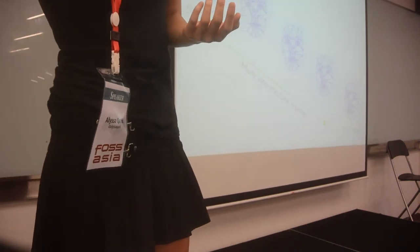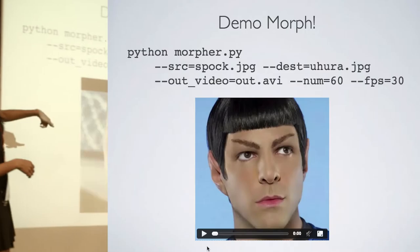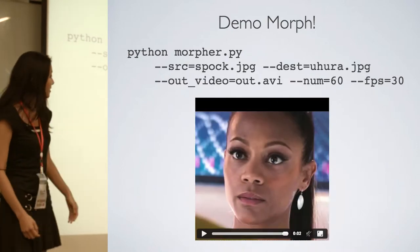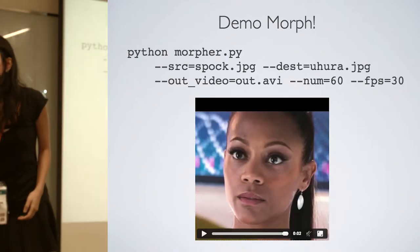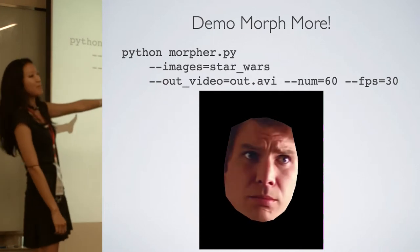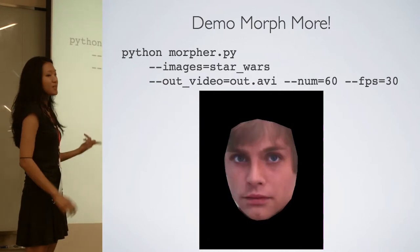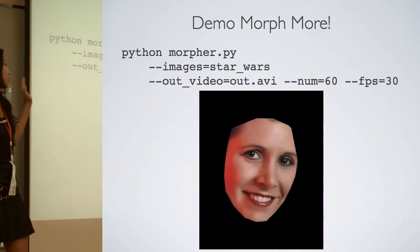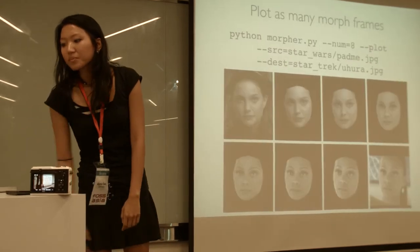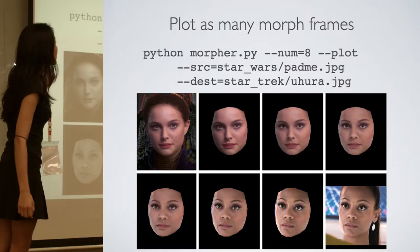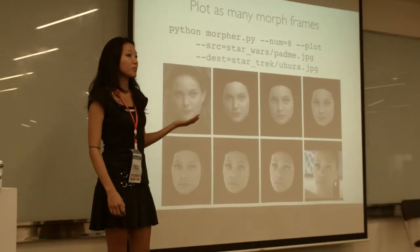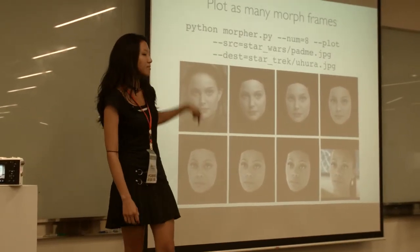Here's the demo — the morphing sequence going back and forth at 60 frames, 30 frames per second. If you want to morph through more images you can apply a folder of images — here I have Star Wars, and it just picks up all the JPEG and PNG files and walks through all of them automatically. If you don't want a video, you can use the plot option to just plot it, or save all the individual frames into a folder with as many intermediate frames as you want.